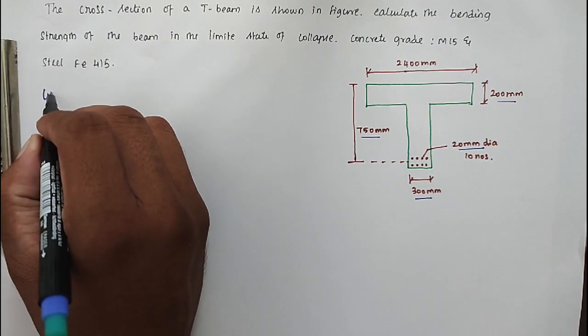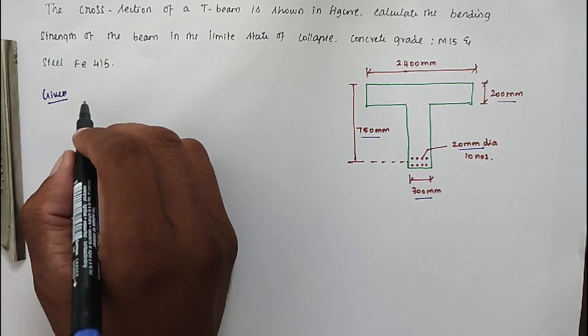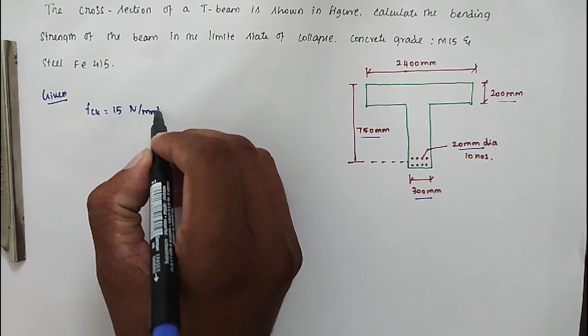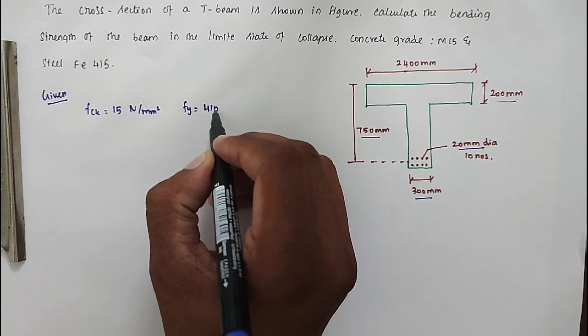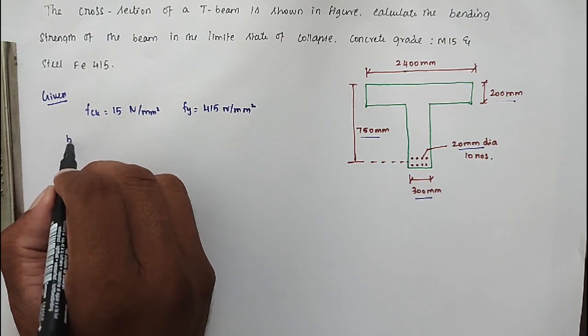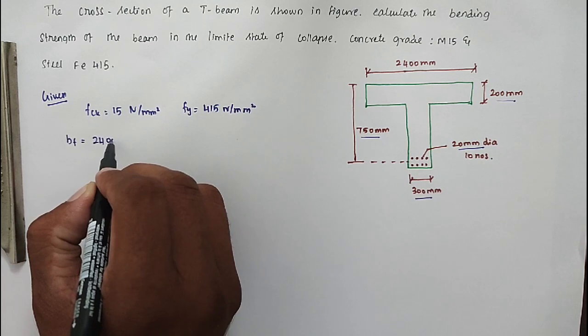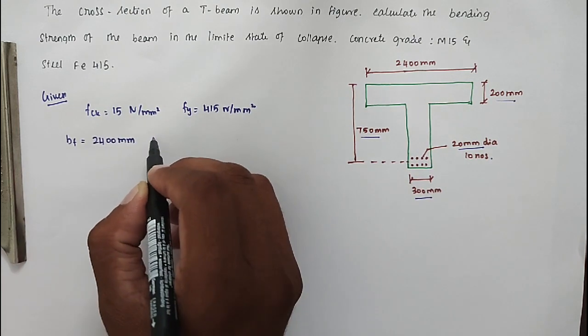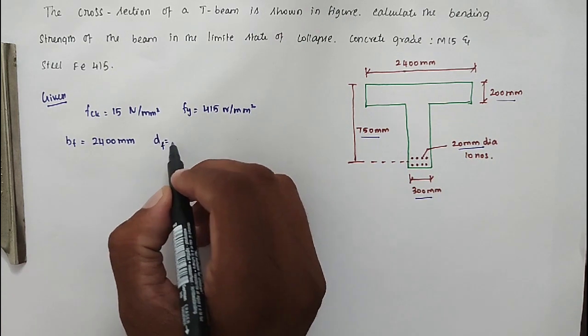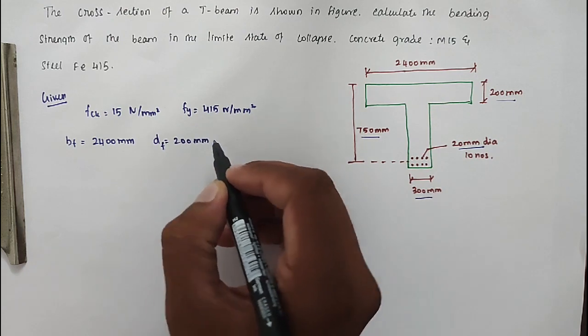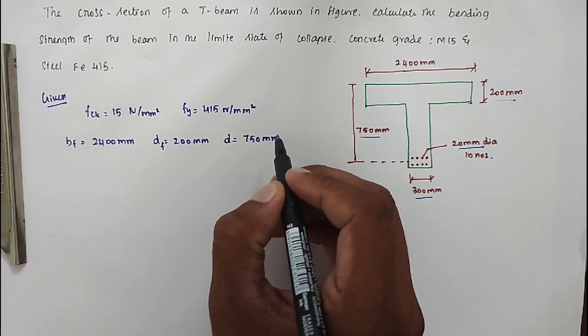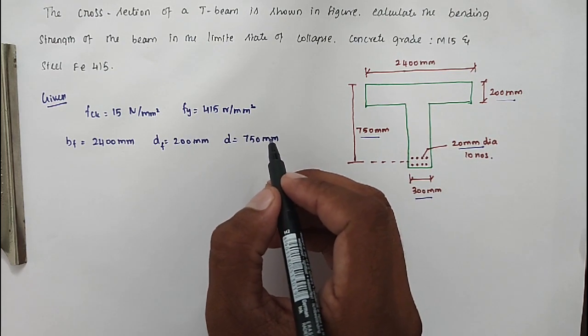So the given values: FCK equal to 15 newton per mm square, FY equal to 415 newton per mm square, breadth of flange 2400mm, depth of flange equal to 200mm, and D effective depth equal to 750mm.